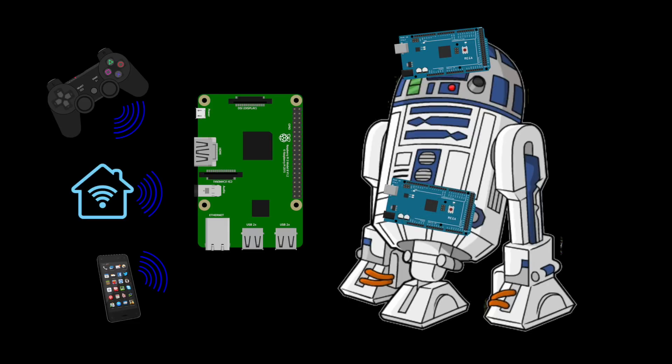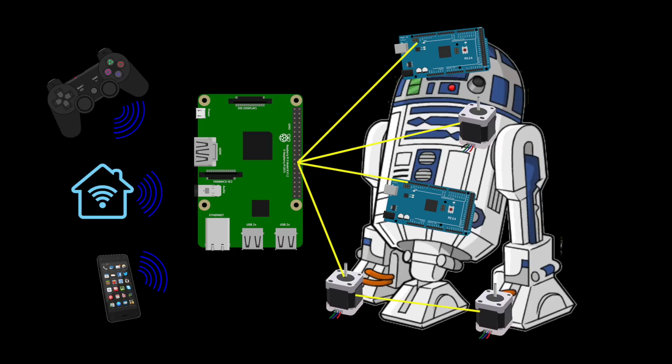In the body is a second Arduino Mega 2560, also connected to the I2C bus. It's responsible for controlling all of the body servos. Also in the body are two motor controllers, one for the dome and one that controls the two drive motors. These are Pololu I2C motor controllers and hence also live on the I2C bus.